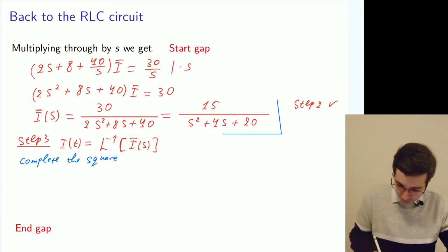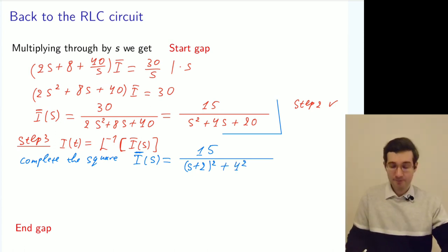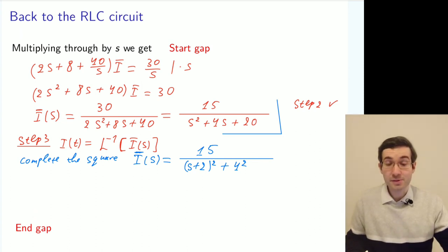And this will give us an expression. i bar of s equals 15/[(s+2)² + 4²]. And that's almost a table expression.